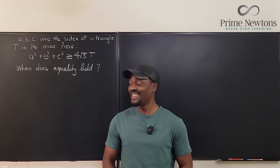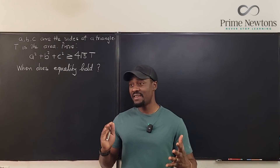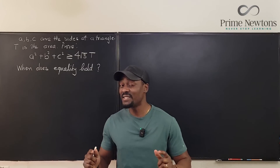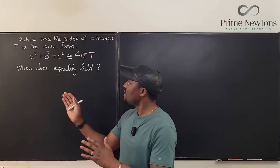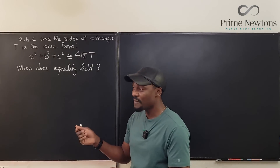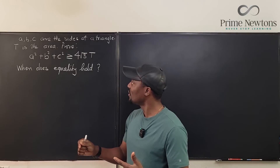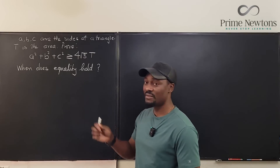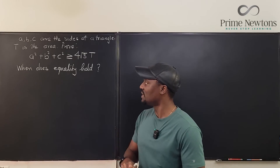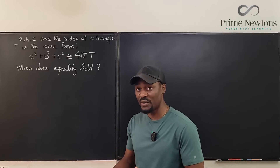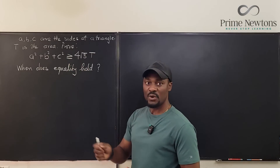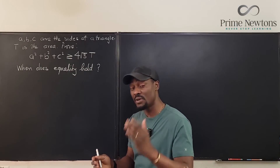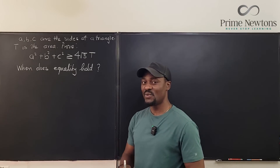Welcome to another video. This is a question from the International Mathematics Olympiad from 1961. You have A, B, C as the sides of a triangle and T is the area of the triangle. You're supposed to prove that A squared plus B squared plus C squared is greater than 4 rad 3 times T. The second part of the question is: when does equality hold? When are you certain that it is exactly equal to?